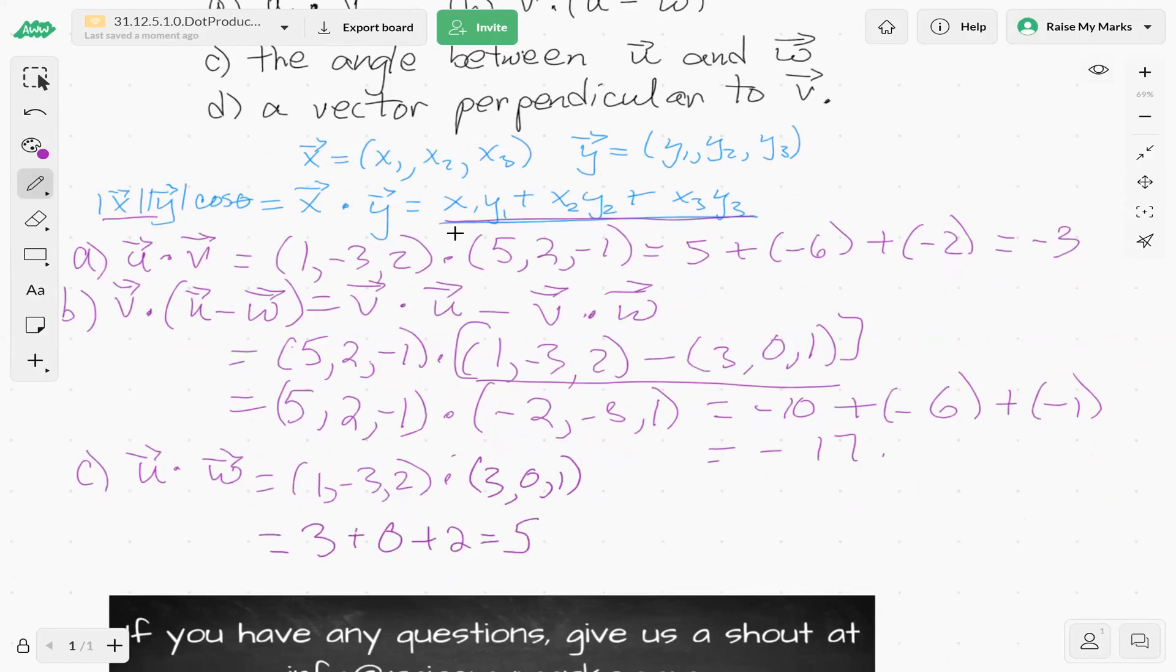Now let's find the magnitude of u. And the magnitude of w. So the magnitude of u is the square root of 1 plus 9 plus 4, that's the square root of 14... wait, 1 plus 9 plus 2. That's the square root of 12. Magnitude of w is square root of 9 plus 1, which is square root of 10.